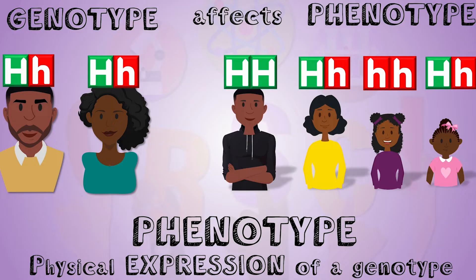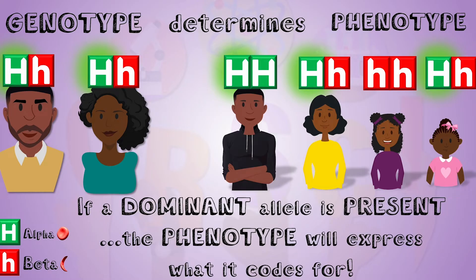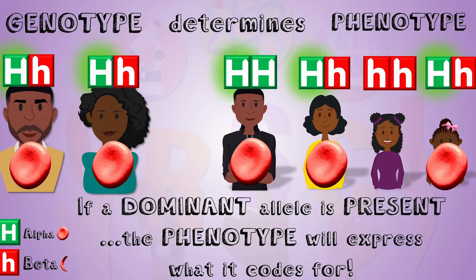If you have one dominant allele, whatever it codes for will always be expressed. So everyone with a capital H will have normal blood cells. And in order for a recessive trait to be expressed, you must be homozygous recessive for that trait. Let's practice.